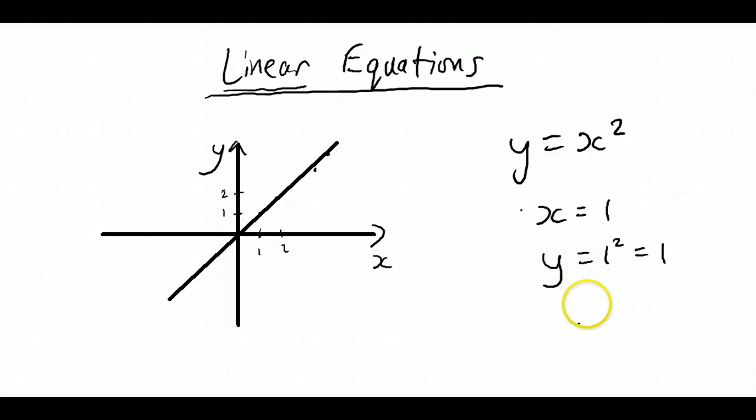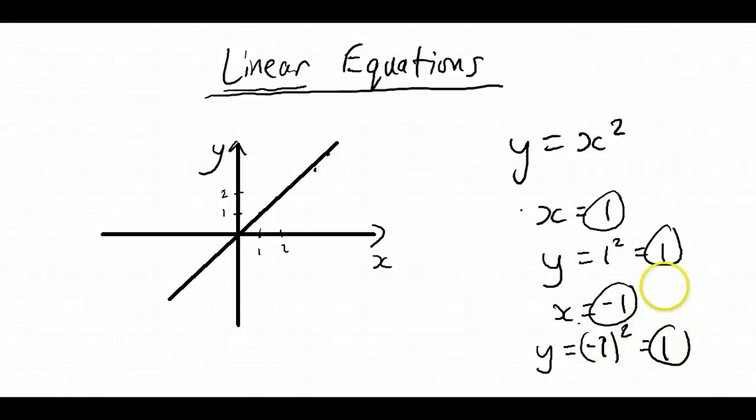But if we then said x equals negative 1, and then we put that into our equation, we'd have y equals negative 1 squared, and that would also equal 1. So making x equal 1 gave us y equals 1, and making x negative 1 gave us y equals 1. So there were two different x values that both produced the same y value.